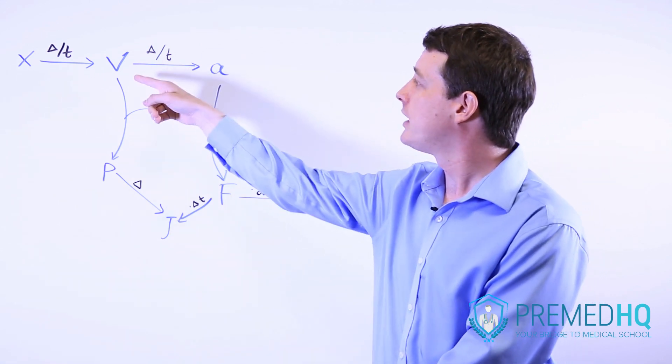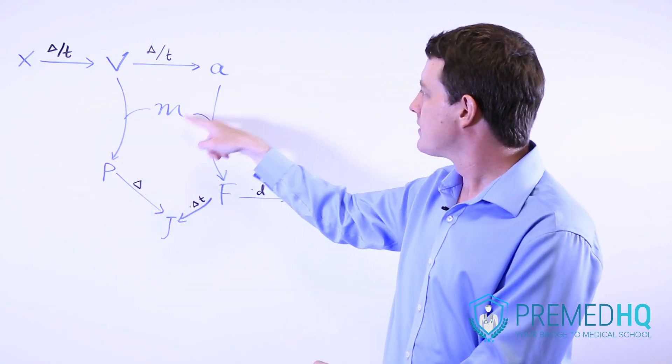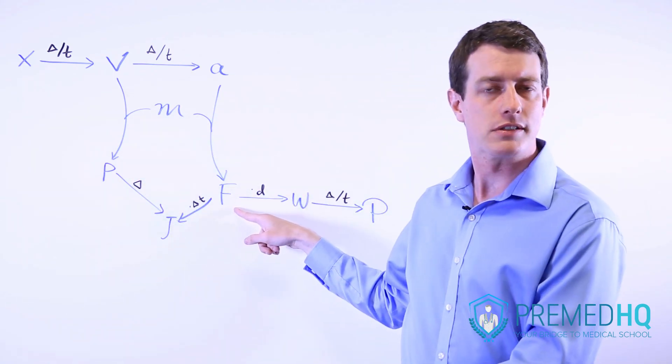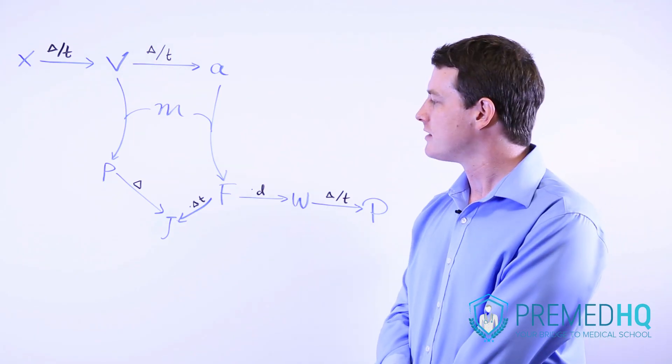Now if you multiply mass times velocity, that gives you momentum. And if you multiply mass times acceleration, that gives you force. F equals ma is one of the most famous equations in physics.